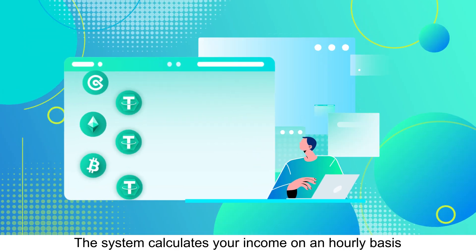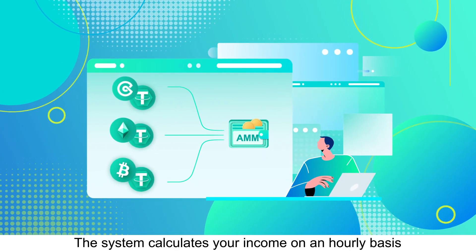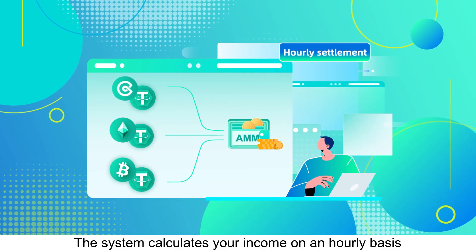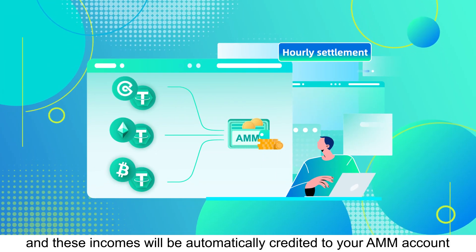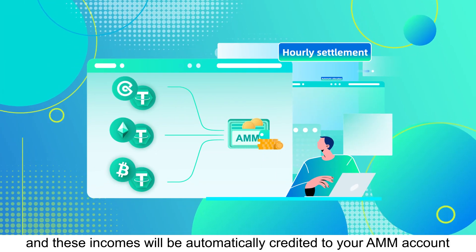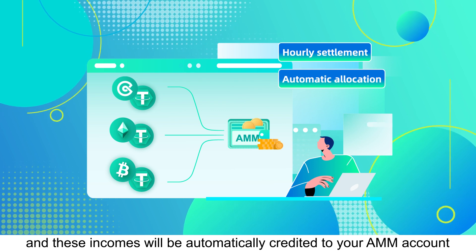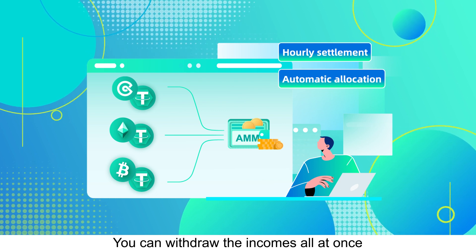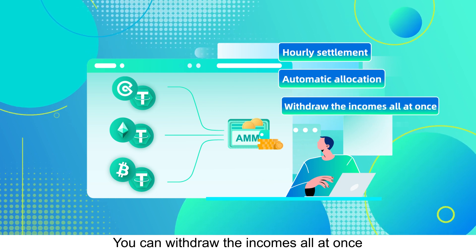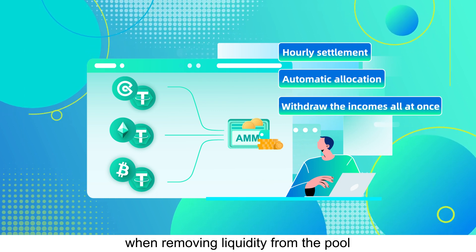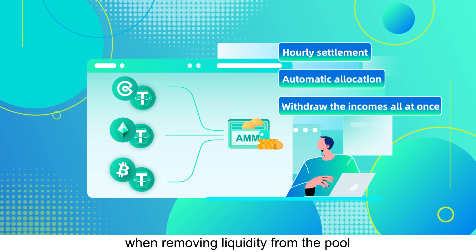Two: accumulate daily profit and withdraw all at once. The system calculates your income on an hourly basis and these incomes will be automatically credited to your AMM account. You can withdraw the incomes all at once when removing liquidity from the pool.